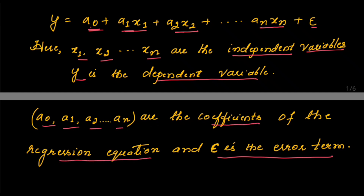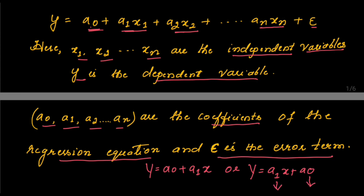In linear regression in the previous sessions, since there was only one independent variable, the equation was y equal to a0 plus a1 into x — or equivalently y equal to a1 into x plus a0 — so you were finding coefficients a0 and a1. Now, since we are going for multiple variables, the number of coefficients will also get increased.